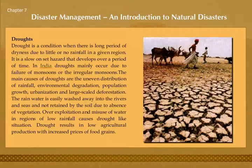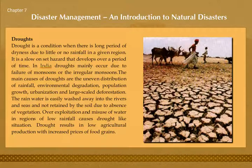Drought is a condition when there is a long period of dryness due to little or no rainfall in a given region. It is a slow-onset hazard that develops over a period of time. In India, droughts mainly occur due to failure or irregular monsoons. Main causes include uneven distribution of rainfall, environmental degradation, population growth, urbanization, and large-scale deforestation. Rainwater is easily washed away into rivers and seas and not retained by the soil due to absence of vegetation. Overexploitation and misuse of water in regions of low rainfall causes drought-like situations.